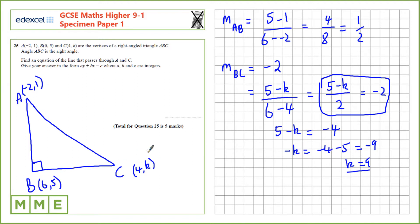From there, we can actually work out the equation of this line. We now know that this point is 4, 9. So, the gradient from A to C is the change in the Y value. So, 1 take away 9, over minus 2 take away 4. That's minus 8 over minus 6, or 4 over 3.